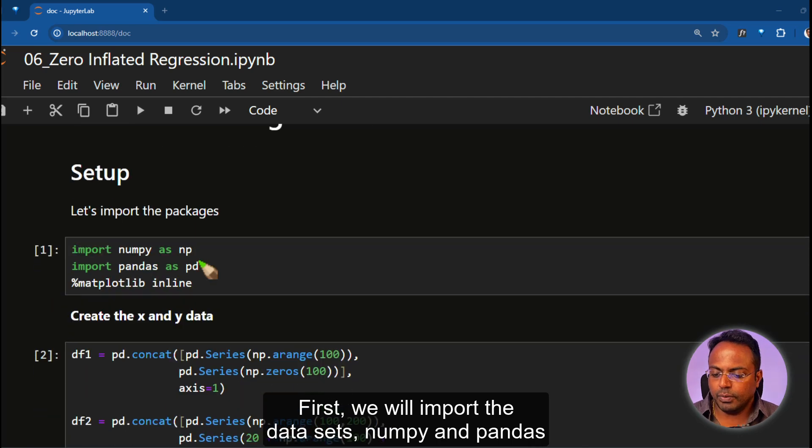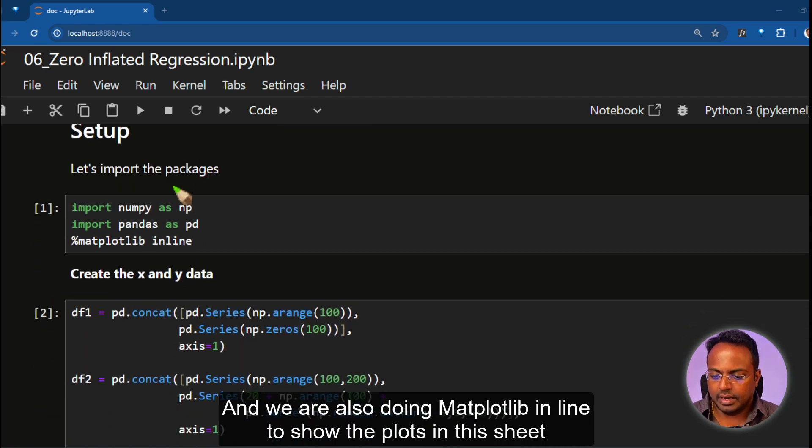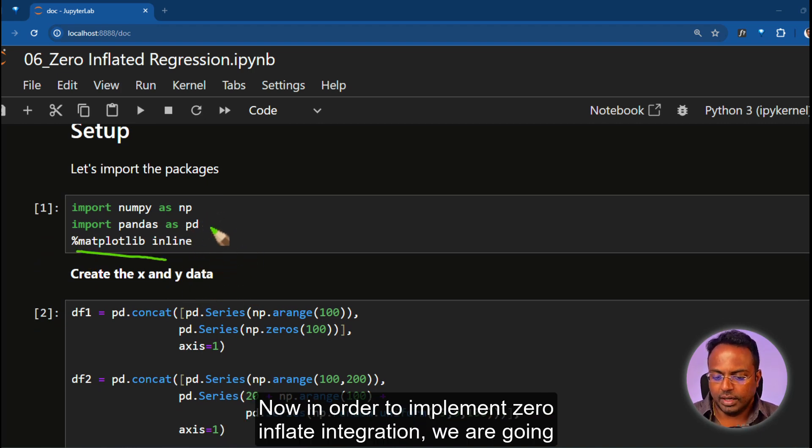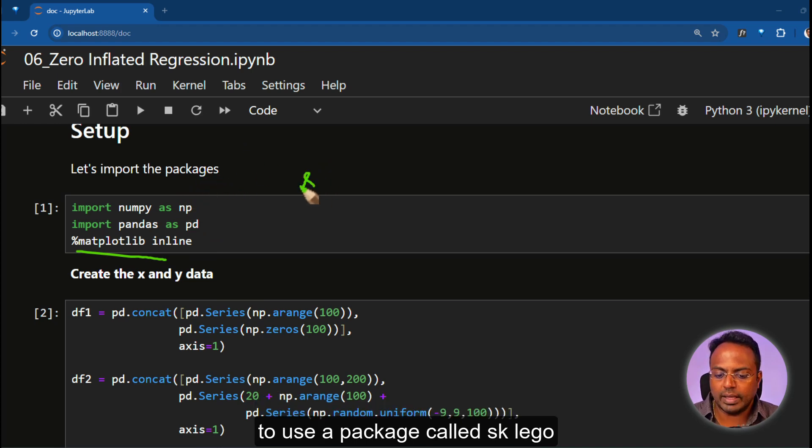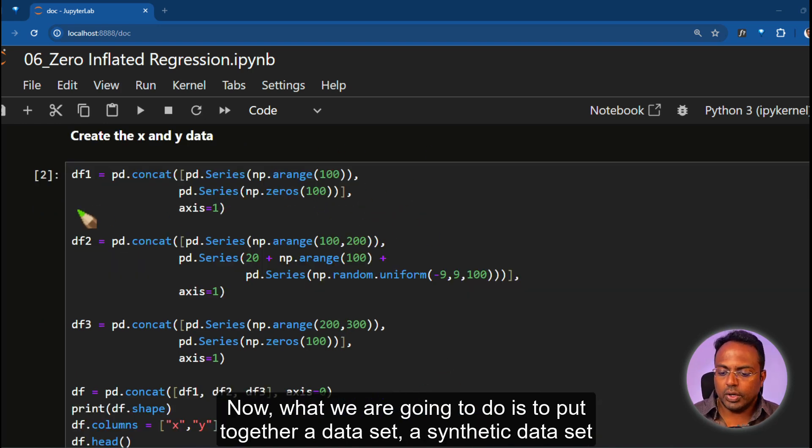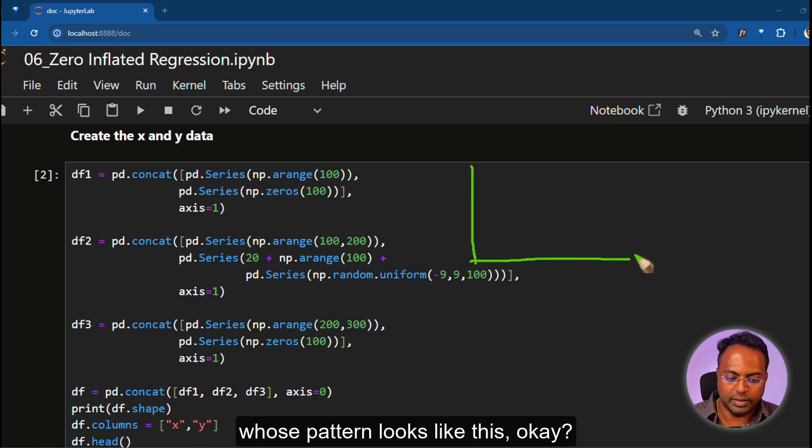First, we will import the datasets, NumPy and pandas. And we are also doing matplotlib inline to show the plots in this notebook itself. Now, in order to implement zero inflated regression, we are going to use a package called sklego. We will come to that part later on in this particular code.